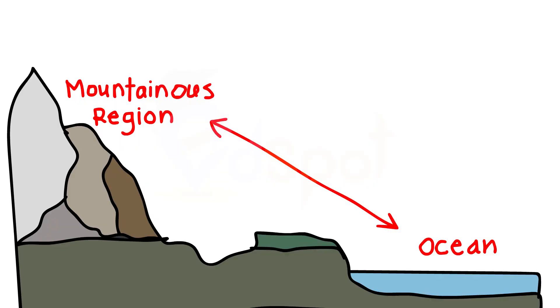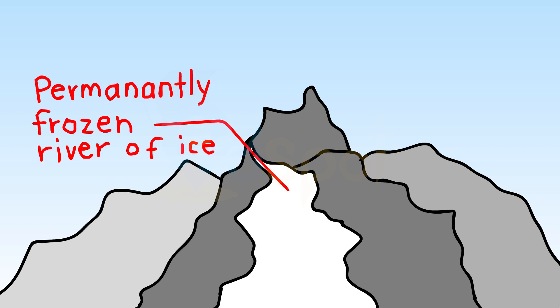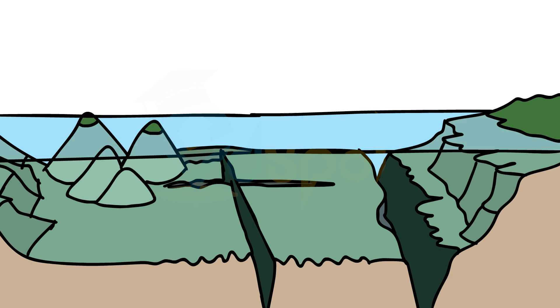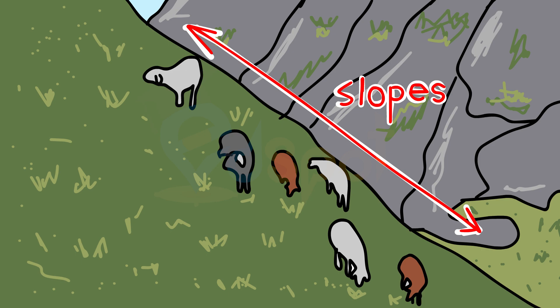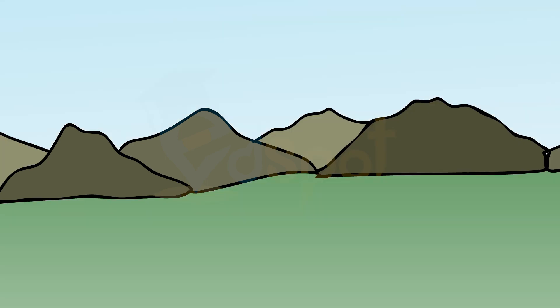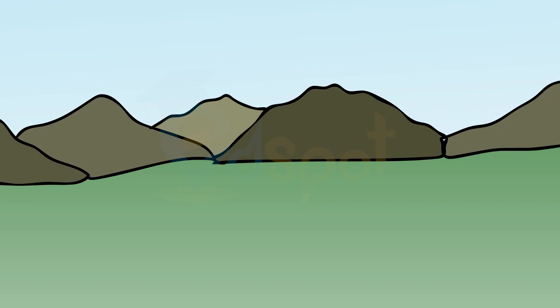As you go higher, the climate becomes colder. In some mountains there are permanently frozen rivers of ice — they are called glaciers. There are some mountains you cannot see as they are under the sea. Because of the harsh climate, fewer people live in the mountain areas. Since the slopes are steep, less land is available for farming.